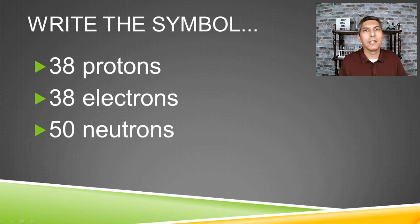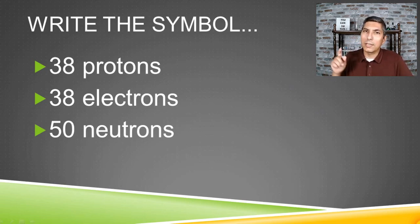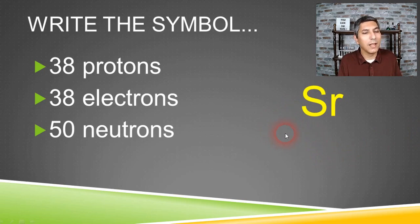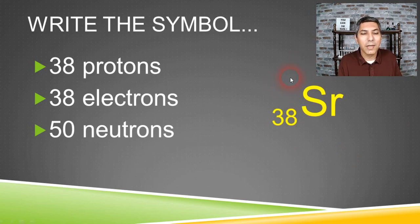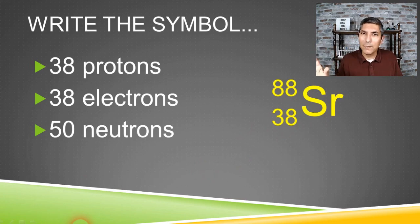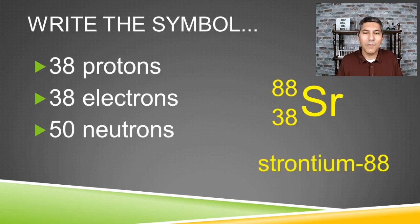Let's try one more example. We'll write the symbol for an isotope with 38 protons, 38 electrons, and 50 neutrons. Consulting the periodic table, anything with 38 protons has to be strontium, so the symbol is Sr. The atomic number 38 goes on the bottom. The mass number is 38 plus 50, which is 88, and that goes on top. So the symbol is 88 over 38 Sr. The name of this isotope is strontium-88.